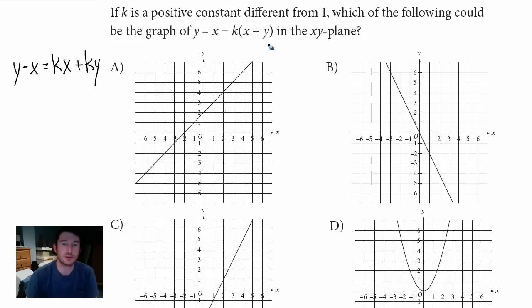So first thing I'm going to do is distribute this stuff over here. Just that into that and that into that. So now I'm going to add x to both sides. So we got y equals kx plus x plus ky.